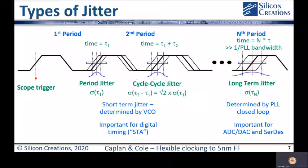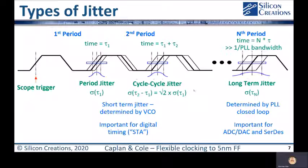If we move our focus to the right and look at the second rising edge, what we're looking at is the cycle-to-cycle jitter or the two-cycle jitter. With purely random jitter, the relationship between the extent of these two Gaussians is the square root of two. Both of these jitter values are short-term jitter and determined by the performance of the VCO only, and they're important for digital timing closure. If we continue to move our focus to the right, eventually when we get to a time much greater than one over the PLL bandwidth, we're looking at the long-term jitter — a measurement of the closed-loop performance of the PLL. This long-term jitter is important for ADCs, DACs, and communication circuits like SerDes.